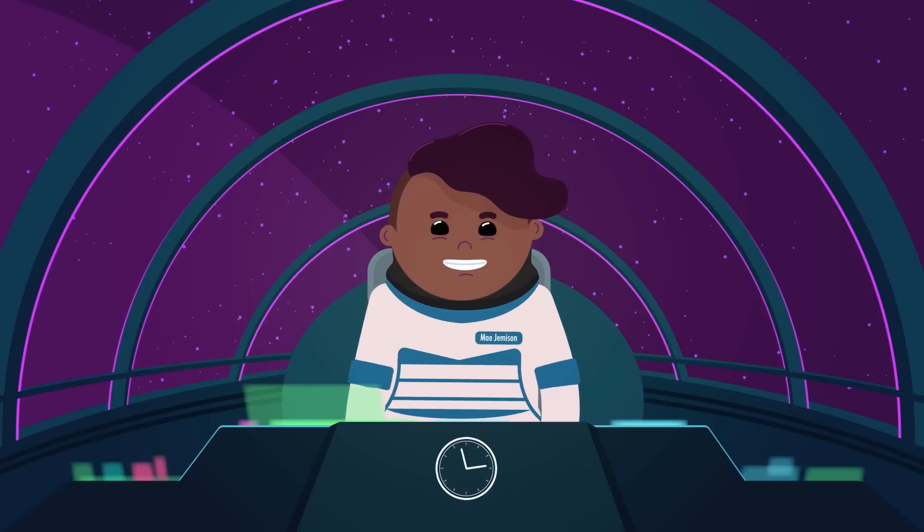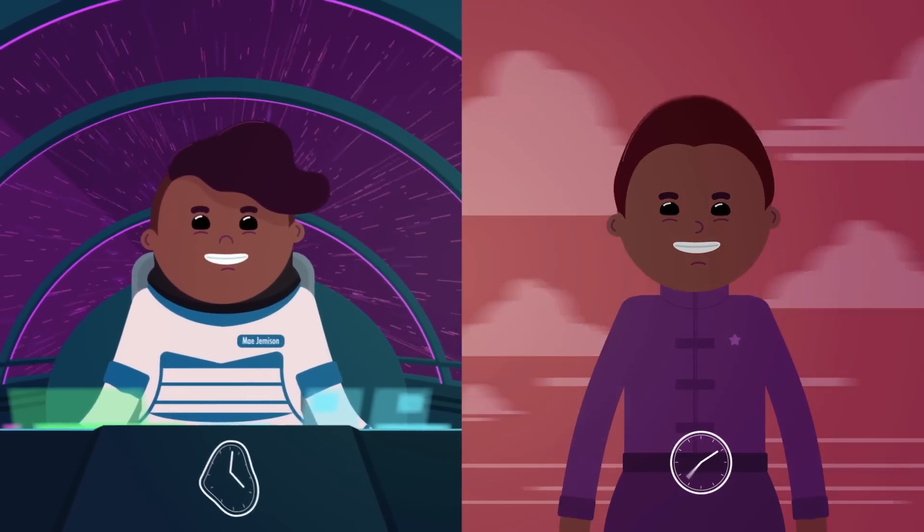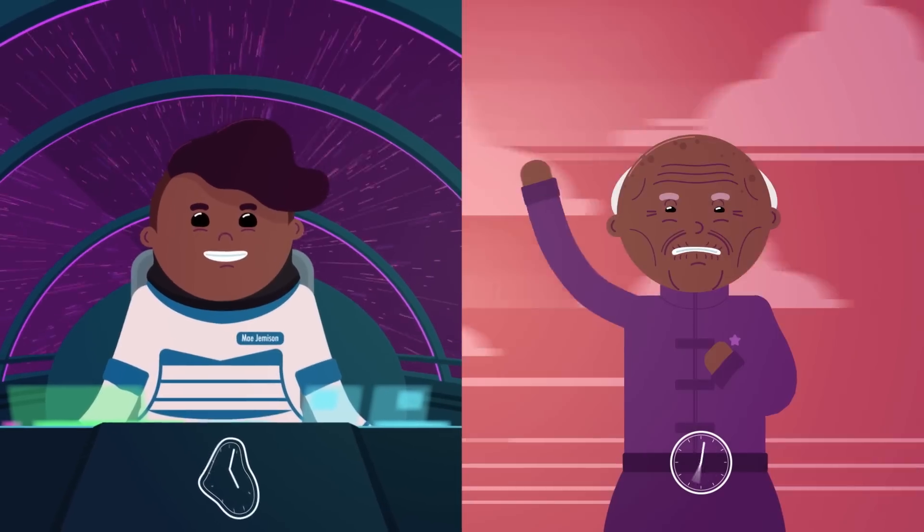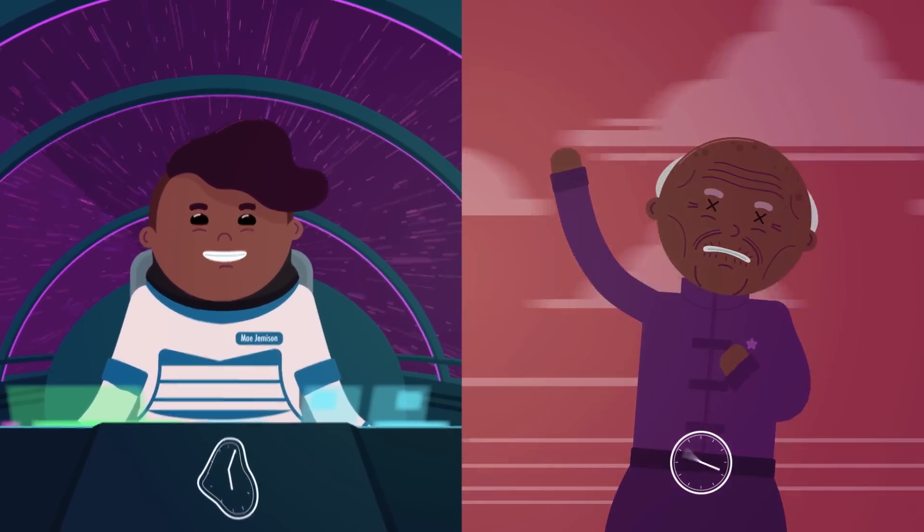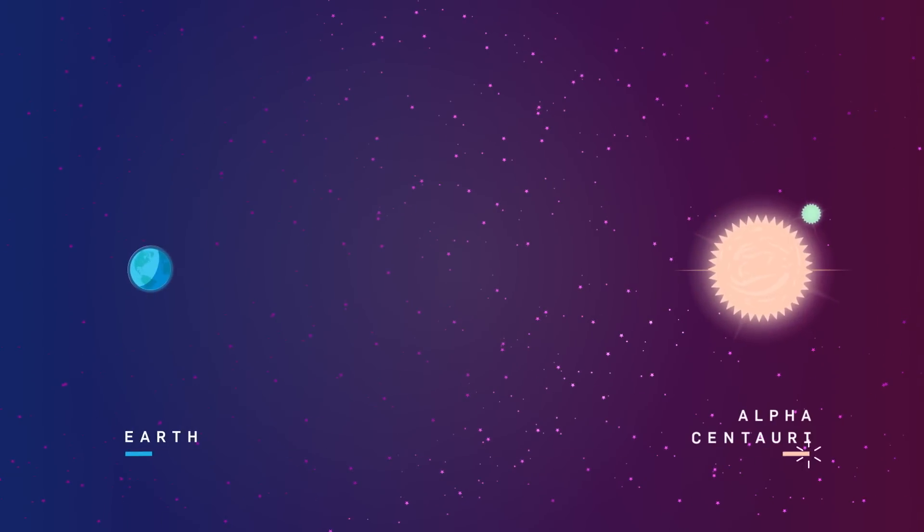If an astronaut can travel at close to the speed of light, time will pass much more slowly for her. When she returns to Earth, her friends will have aged more than she has. For example, if near-light speed travel were possible, an astronaut could travel to Alpha Centauri, our closest neighboring star system, 4.37 light years away.